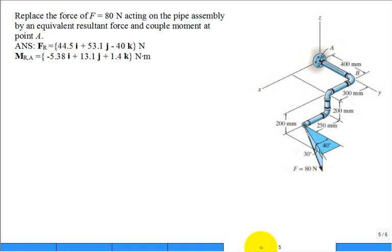It says replace the force of F equal to 80 Newton acting on the pipe assembly by an equivalent resultant force and couple moment at point A. The equivalent resultant force is going to be applied at point A as well as the couple moment at point A.